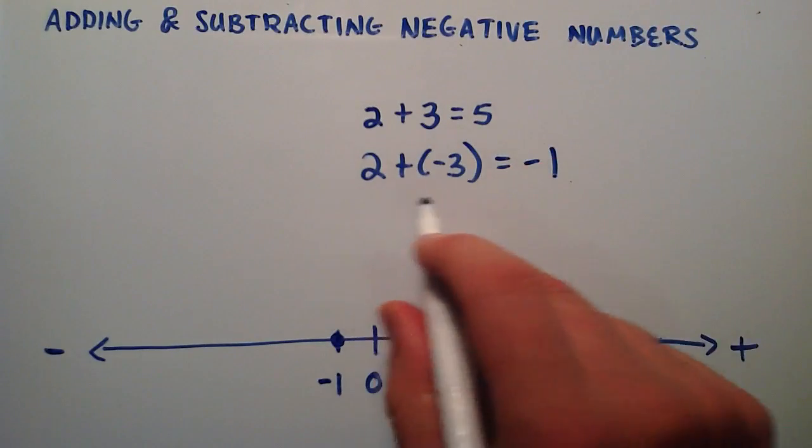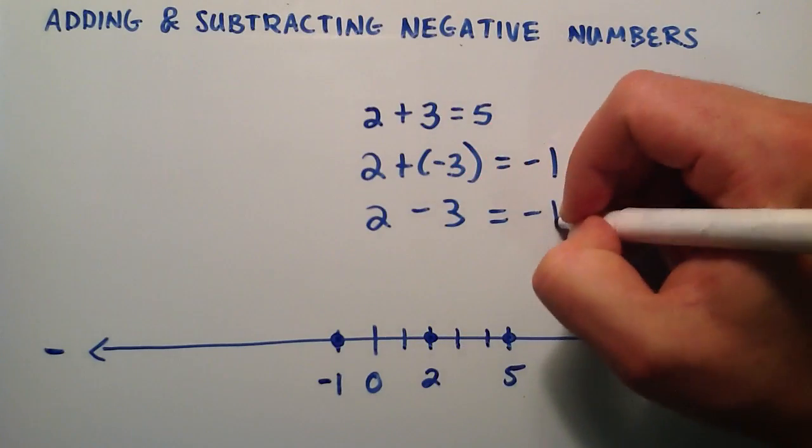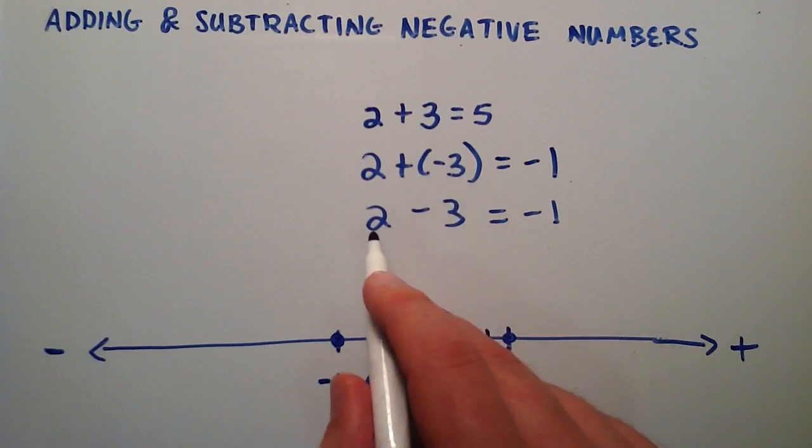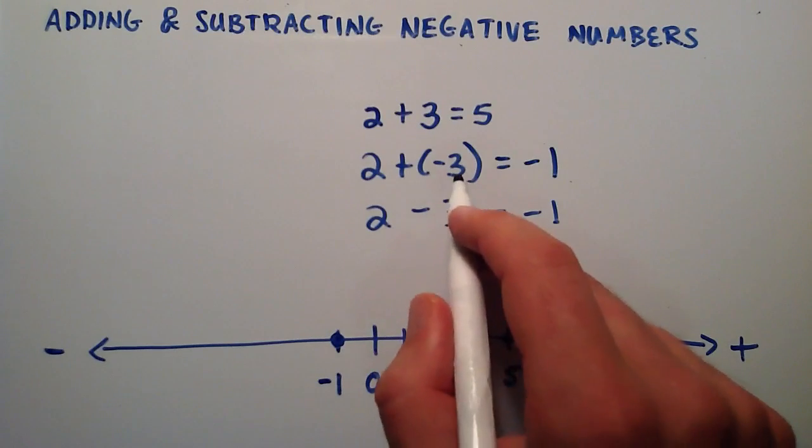Another way to write this expression is 2 minus 3 equals negative 1. So anytime you see plus a negative, it's the same thing as that number minus the other number.